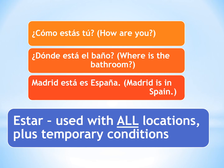Here are some examples of estar. Estar is used with all locations plus temporary conditions. '¿Cómo estás tú?' — 'How are you?' — it's asking about your status or condition. '¿Dónde está el baño?' — 'Where is the bathroom?' — that's a location, so we need estar. And 'Madrid está en España' — 'Madrid is in Spain' — again, that's a location. Locations always use estar.